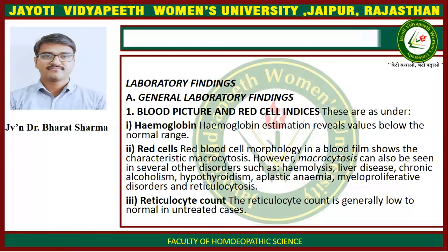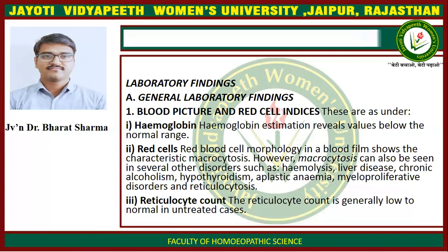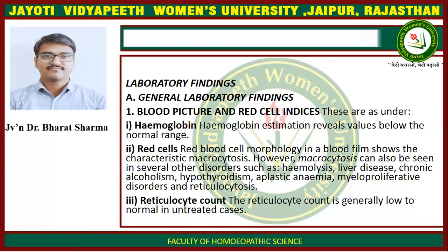Laboratory Findings — Blood Picture and Red Cell Indices: Hemoglobin estimation reveals a value below the normal range. Red blood cell morphology in a blood film shows characteristic macrocytosis. However, macrocytosis can also be seen in several other disorders such as hemolysis, liver disease, chronic alcoholism, hypothyroidism, aplastic anemia, myeloproliferative disorder, and reticulocytosis.